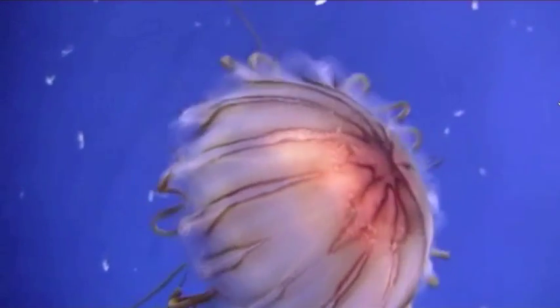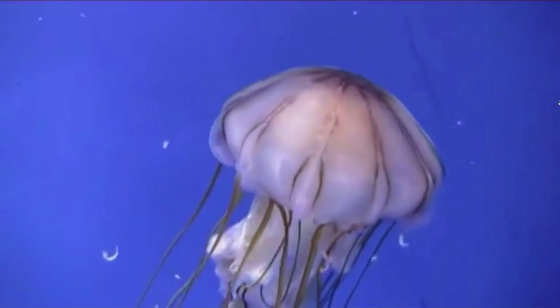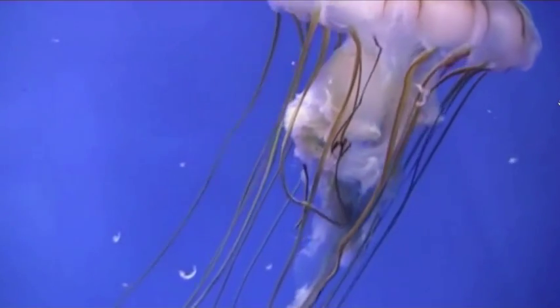To move forward, jellyfish take water into their muscular bow and then squirt it out behind them, creating a jet of water that propels the jelly forward. In addition to this form of movement, jellyfish also drift on water currents to move.